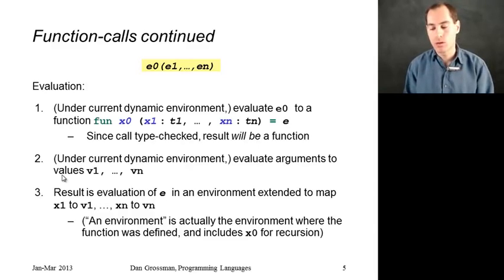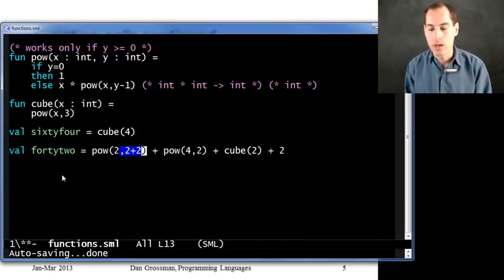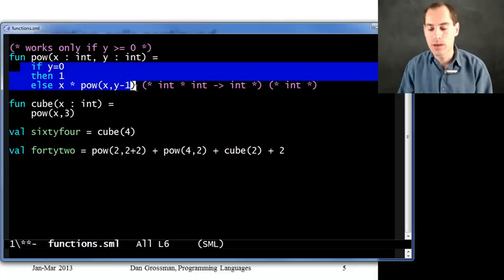Step 3 is to actually evaluate the function body. We're going to extend the dynamic environment that was there when we defined the function with extra values for the arguments. So x will be 2 and y will be 4. In general, the n arguments to our function, x1, x2 up through xn, end up being bound to the values for this call: the first value argument, the second value argument, the third value argument. And lastly, inside that function body, any recursive calls are bound to the function itself. So when we call pow with 2 and 4, we evaluate this function body in a dynamic environment where x is bound to 2, y is bound to 4, and pow is bound to the function itself.